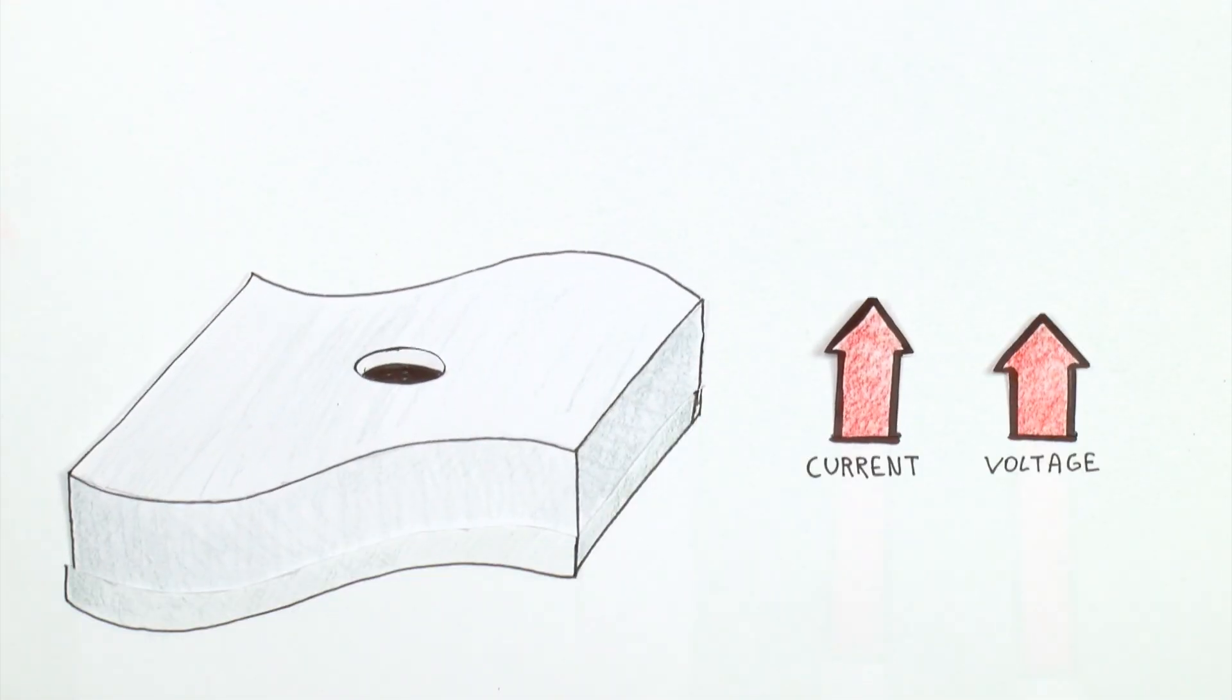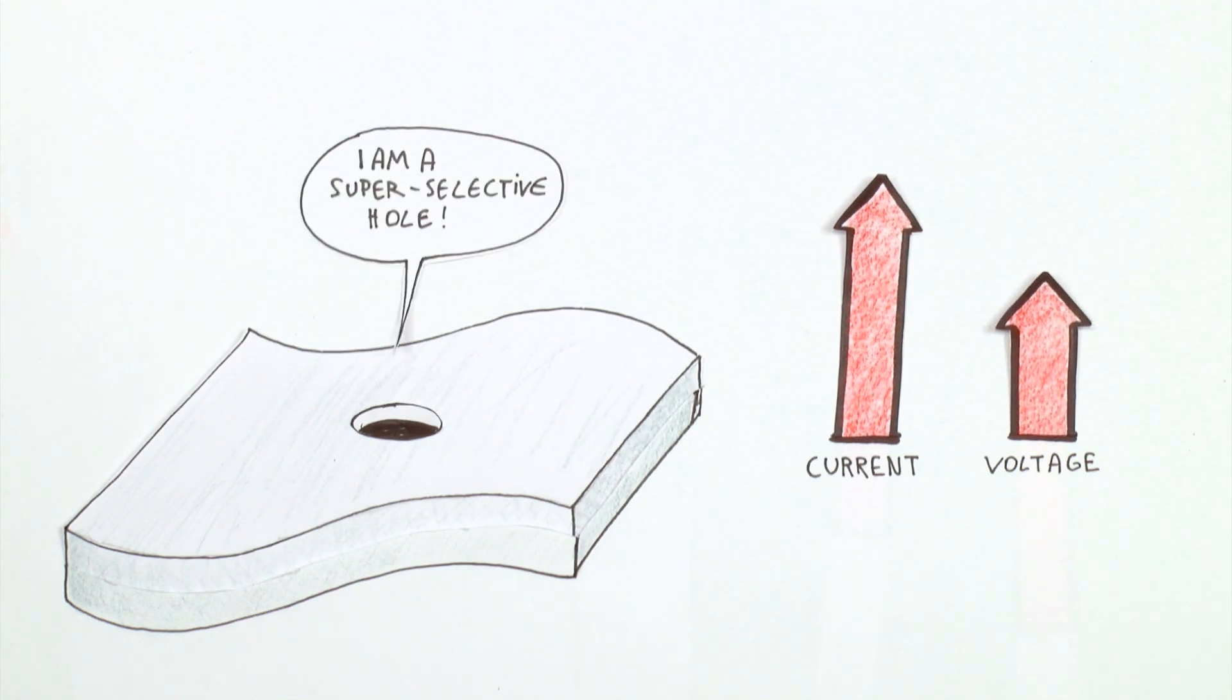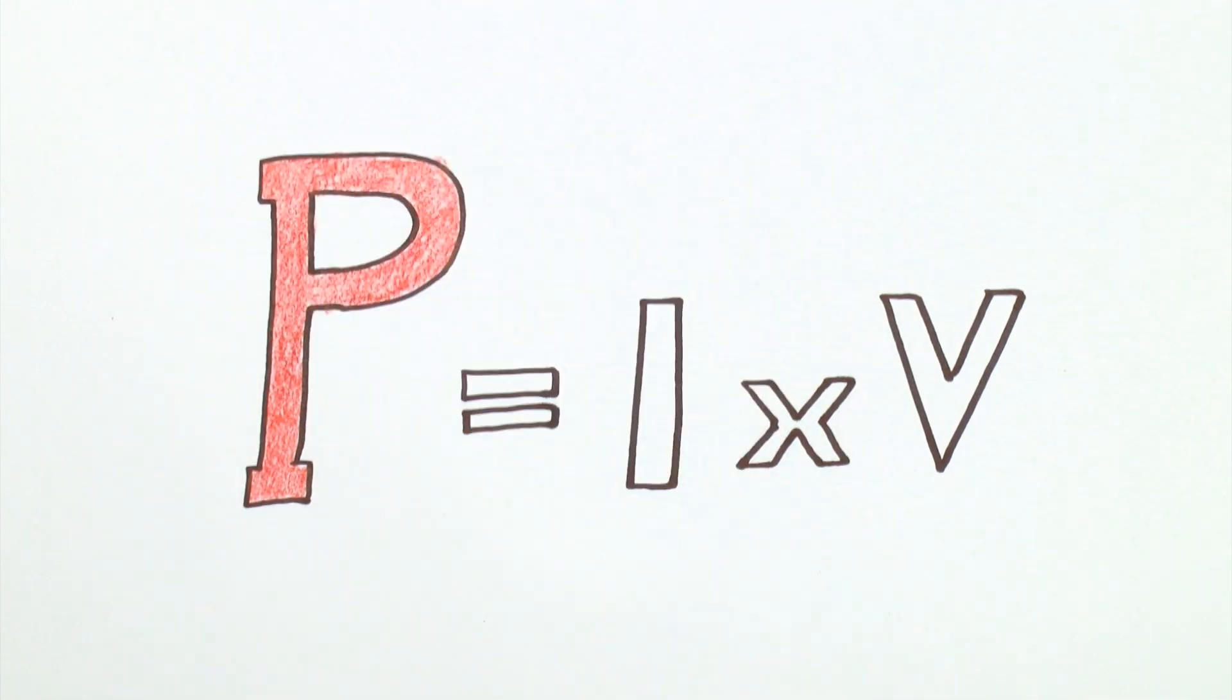So to summarize, the thinner membrane equals more current, and the selective pores equal higher voltage. As we all learned from electricity 101 and quite possibly forgot, power equals current times voltage. It's the famous P equals I times V.